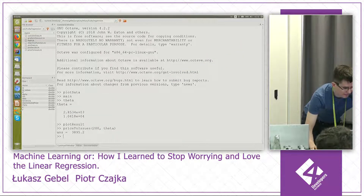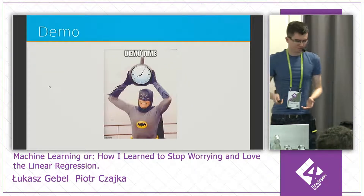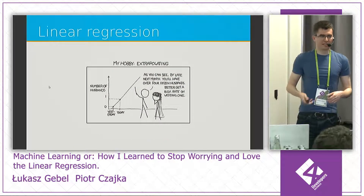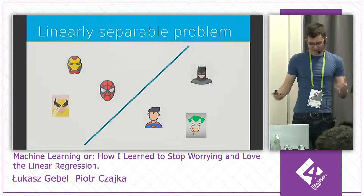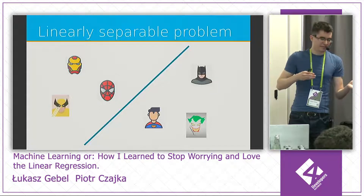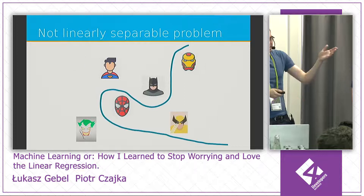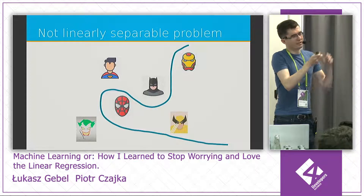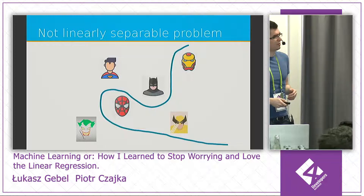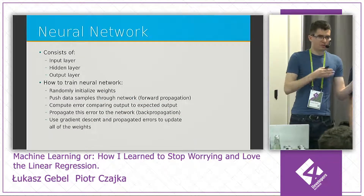The key takeaway from linear regression is that gradient descent is also used in neural network training. The limitation of linear regression is that it's linear — and usually real-life problems are not linear. For example, if you want to distinguish superheroes from Marvel versus DC Universe, a linear problem can be solved with a straight line, but if the data isn't linear — which is usually how real-world data looks — you need a nonlinear function, like a curve, to separate one group from another.